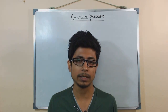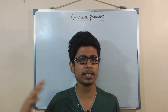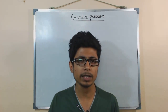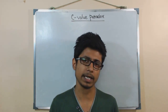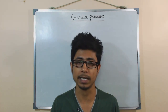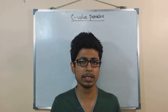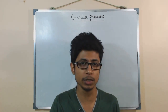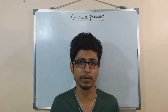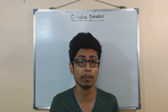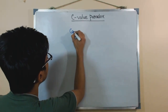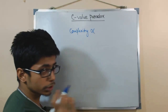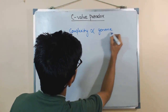The c-value paradox refers to the complexity of the DNA in relation to the structure of the organism. The idea originated around 1948. People thought that since eukaryotic organisms are much more complicated than prokaryotes, the complexity of an organism might be reflected in its genome — meaning complexity would be proportional to the genome size of that organism.